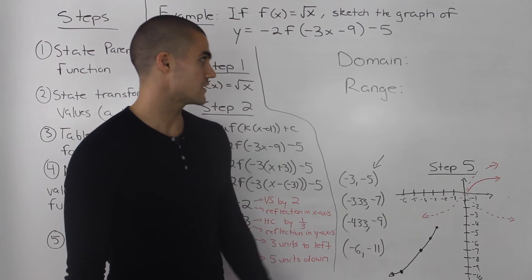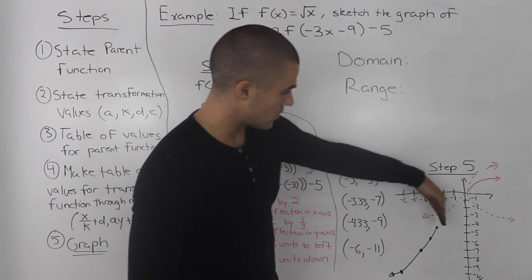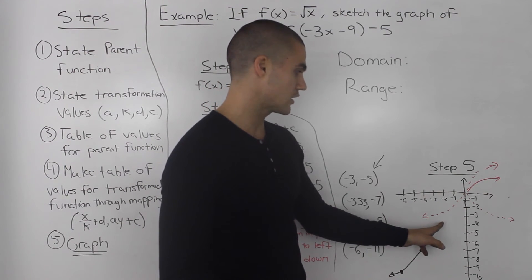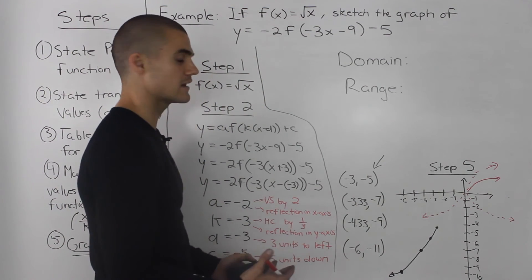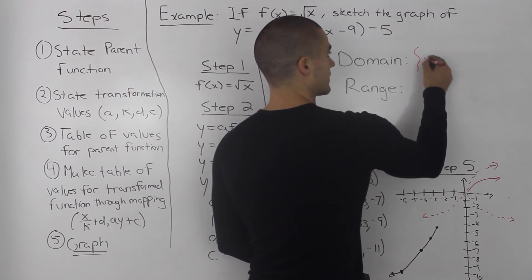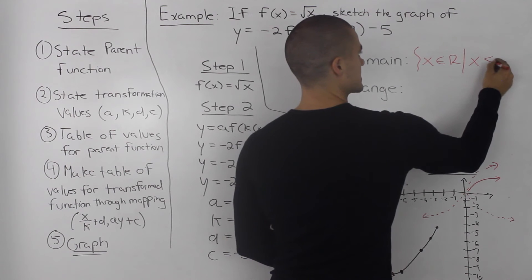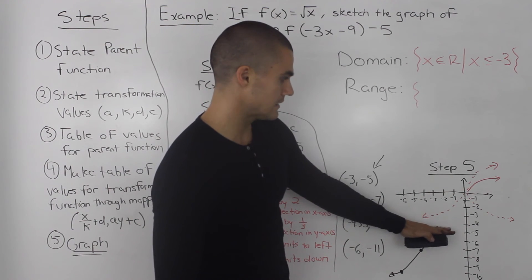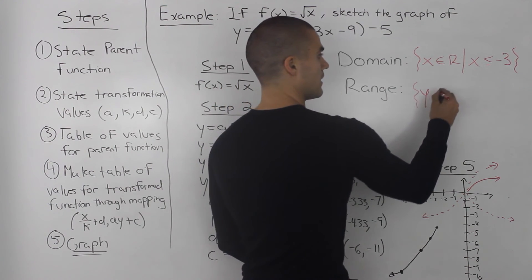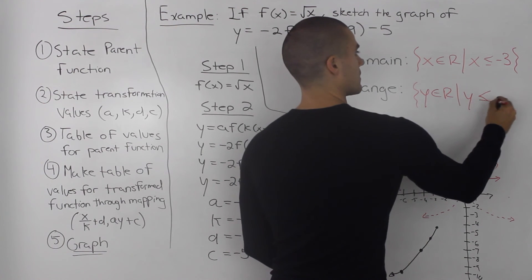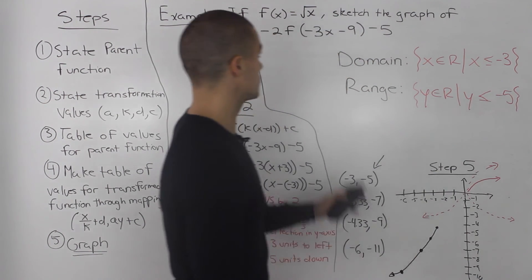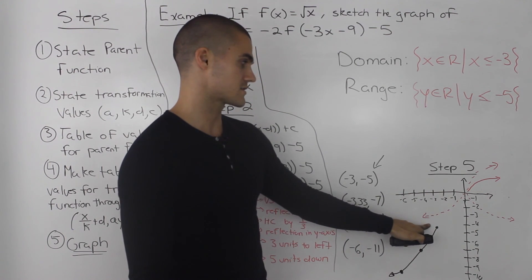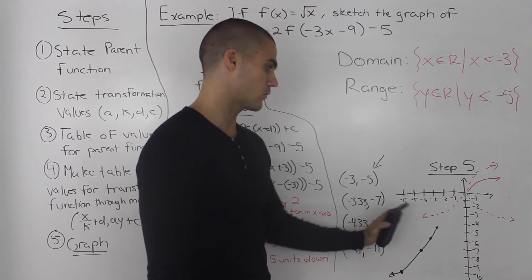As a bonus, let's state the domain and range of the transformed function. Notice that all x values must be less than or equal to negative 3, because anything greater would put a negative under the square root, making it undefined. So the domain is x ∈ ℝ such that x ≤ −3. The y values must be less than or equal to negative 5, so the range is y ≤ −5. Whenever you deal with the square root function, there's always a restriction on domain and range dependent on the vertex and any reflections.